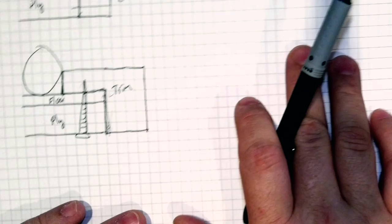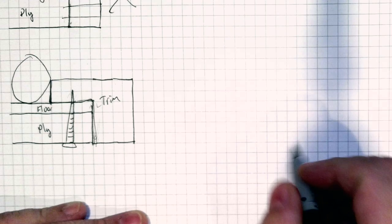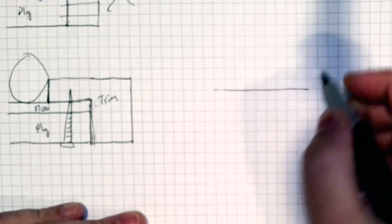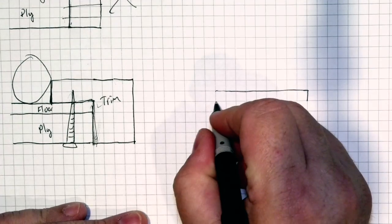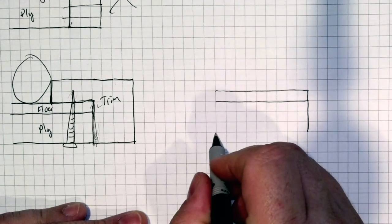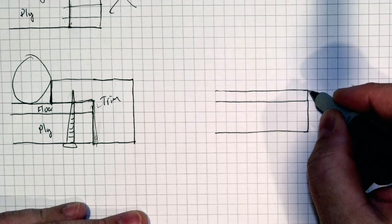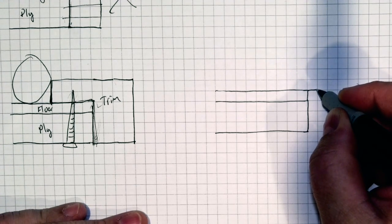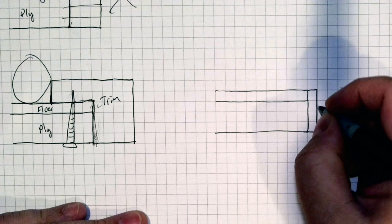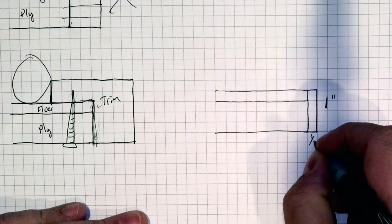We hit the drawing board again and what we ended up building is something that looks like this. We take our piece of flooring, our piece of plywood, and then what we put was over here: a one inch high by quarter inch wide piece.